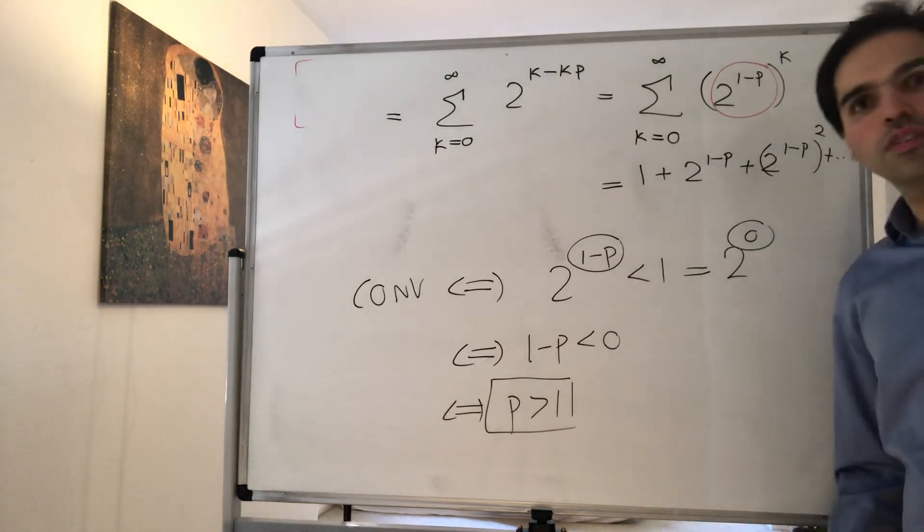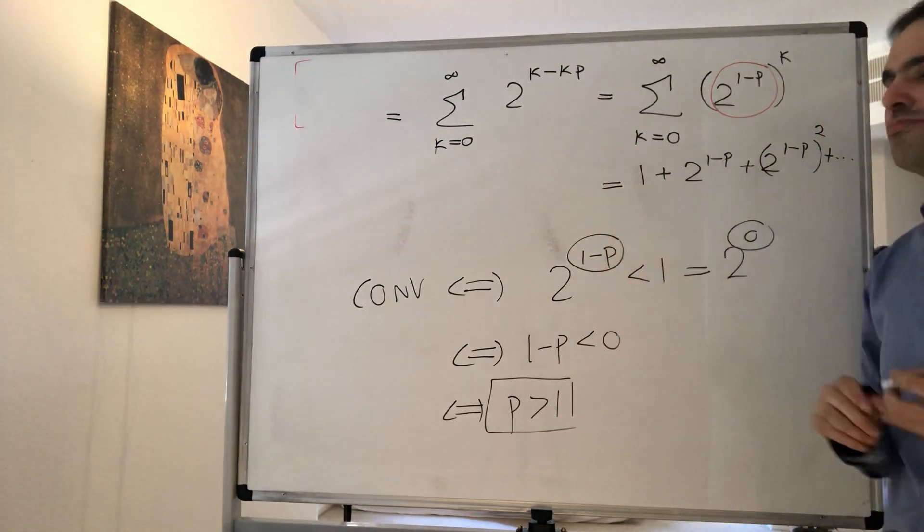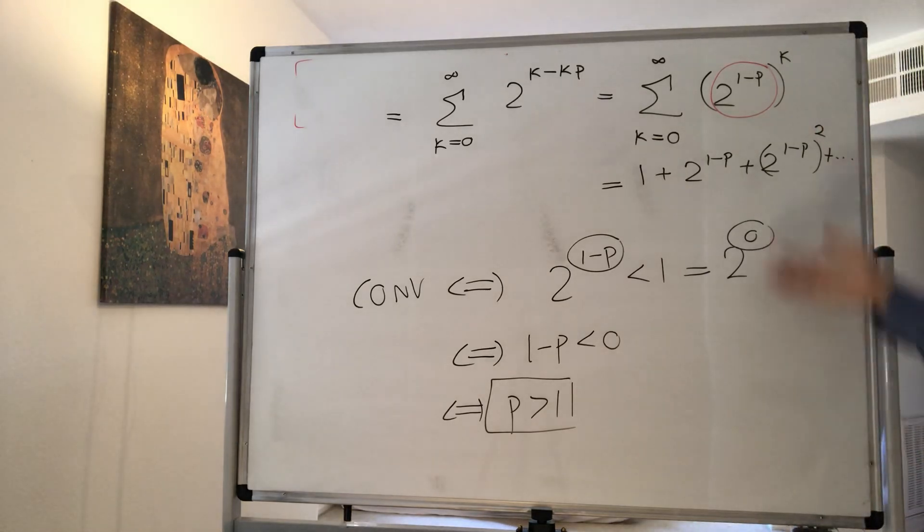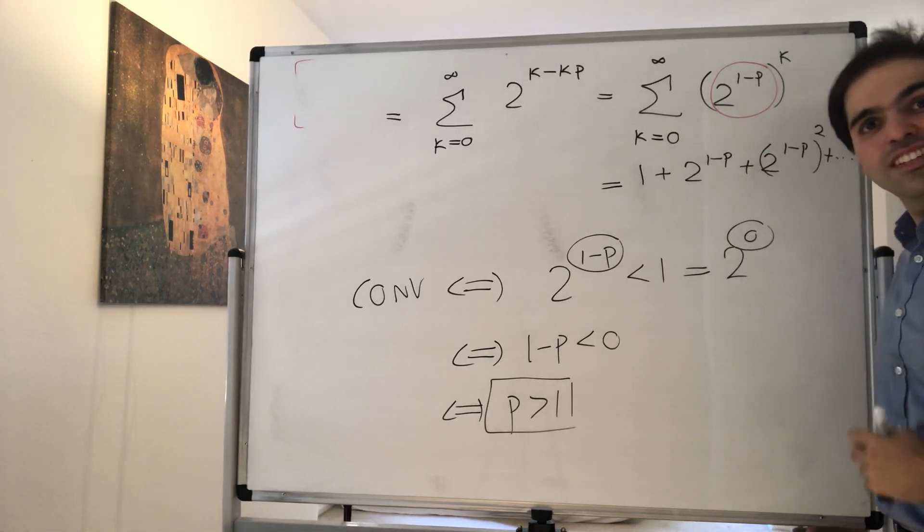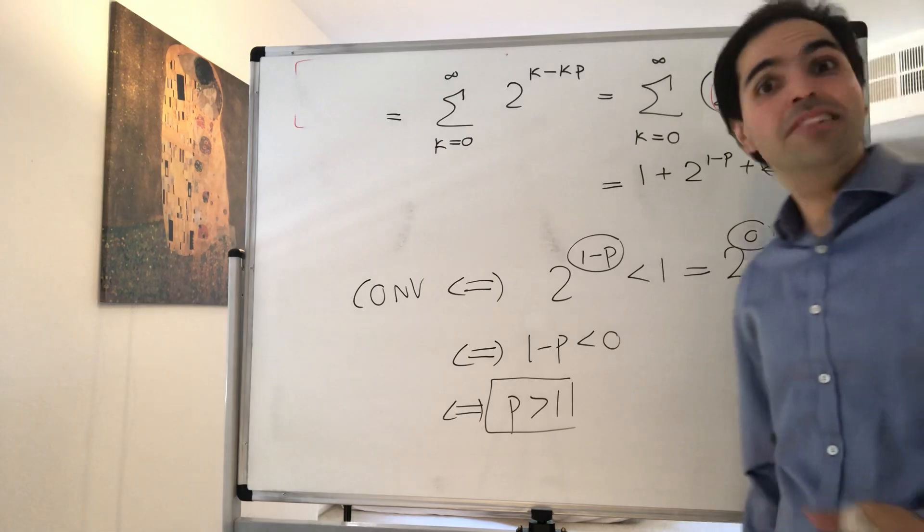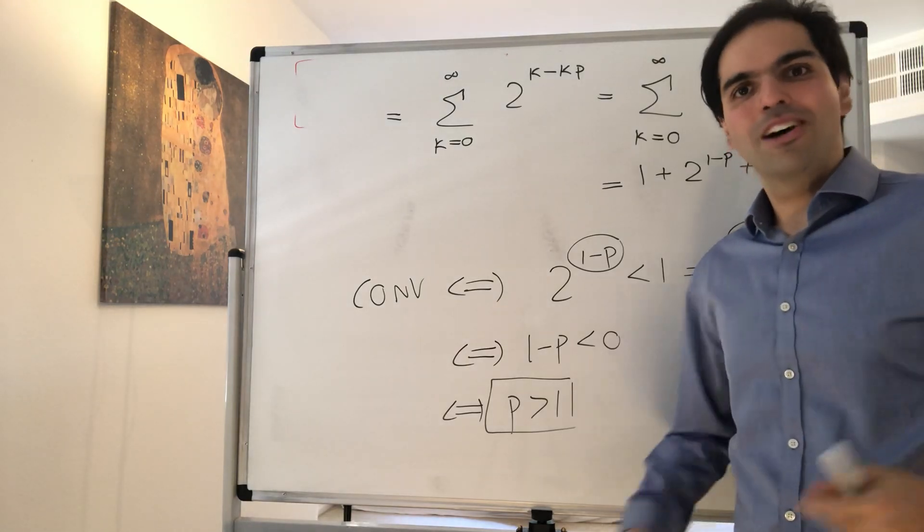So you see, without even using the integral test, we can simply determine if this converges or not. And again, the nice thing is, what that block test, all it does for this series, it converts the p-series into a geometric series. Who would have thought?